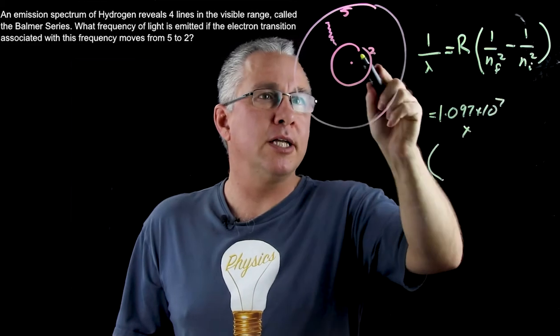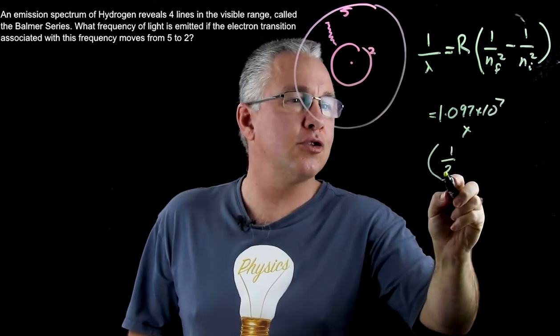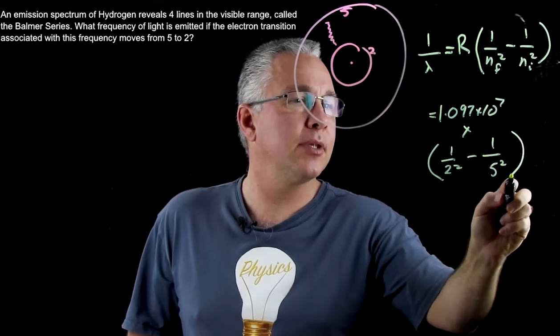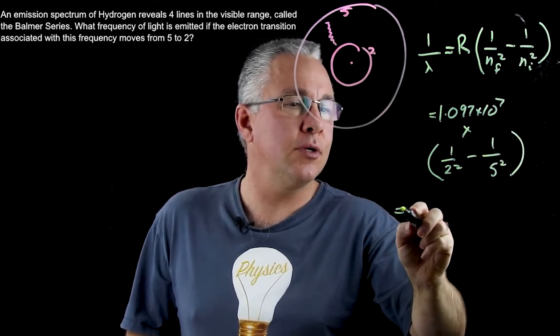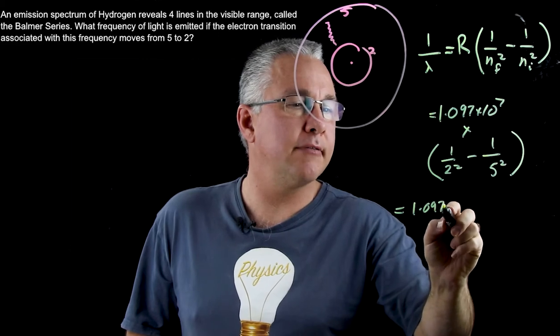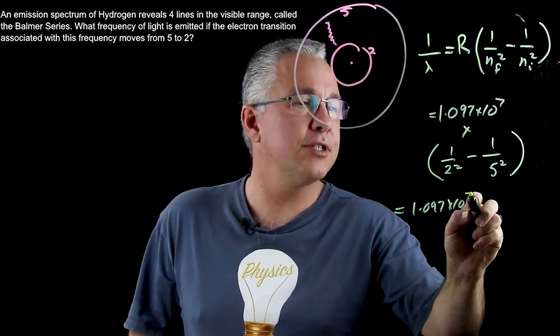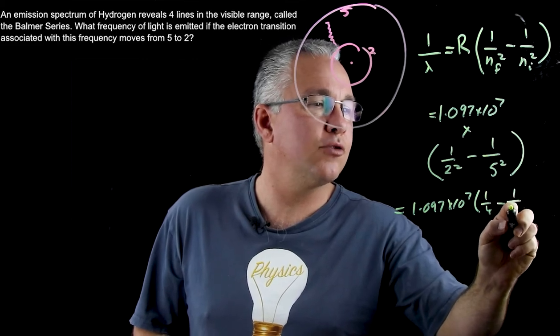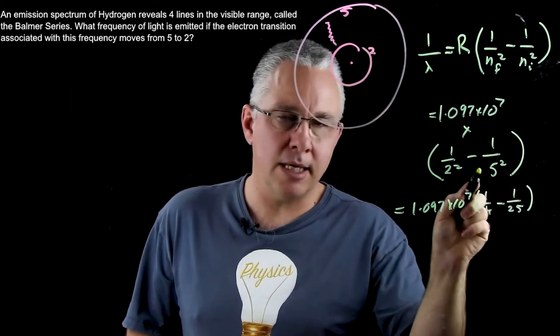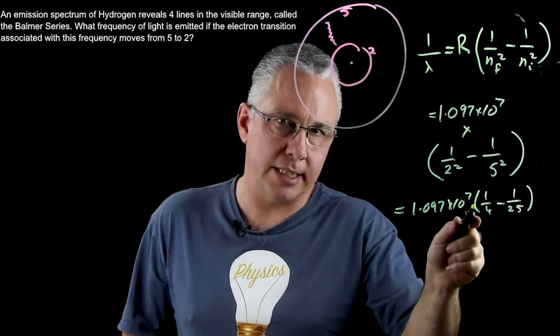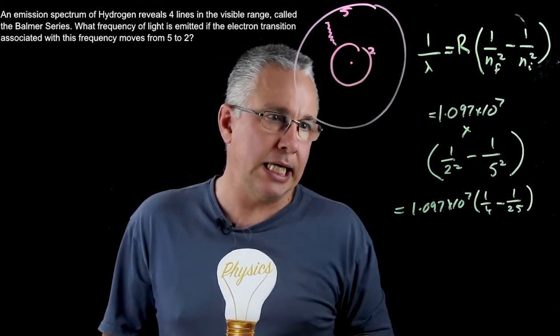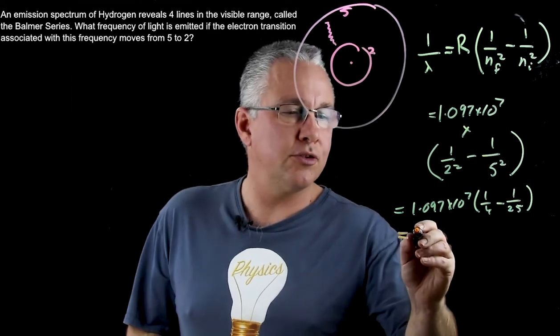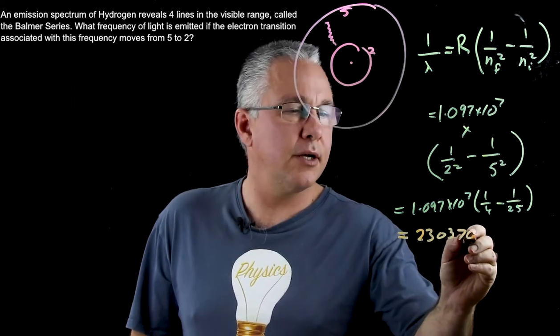Now that's multiplied by - now our final is 2, so we get 1 over 2 squared minus 1 over 5 squared. So that is equal to 1.097 times 10 to the power of 7 outside of 1 over 4 minus 1 over 25. Now this number always has to be smaller than this number - that's the only way we're going to release energy.